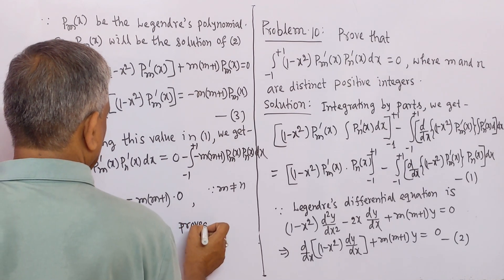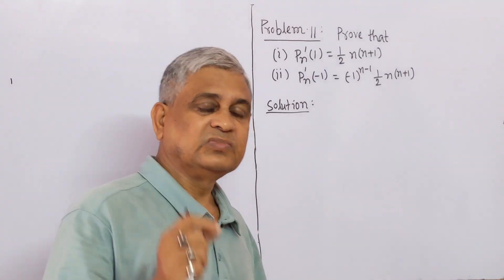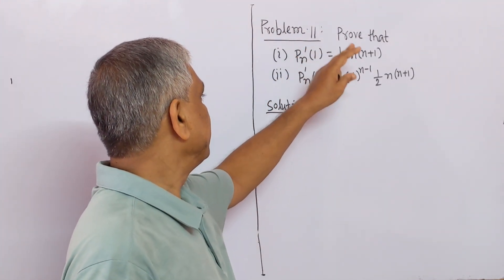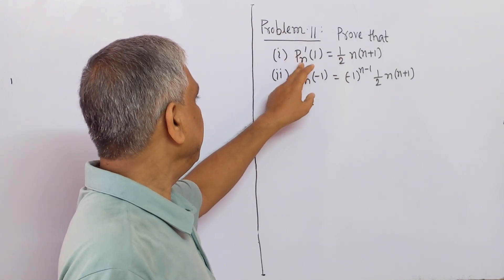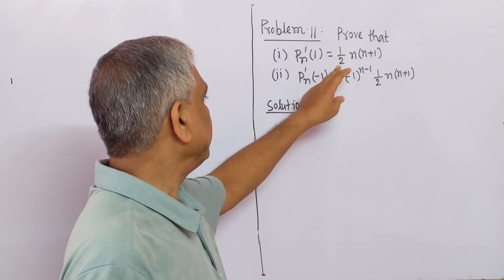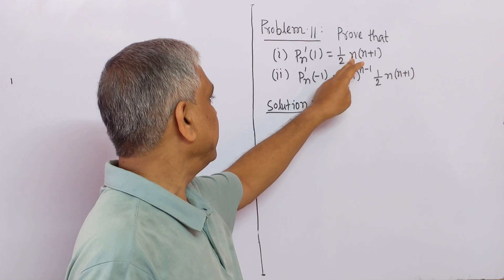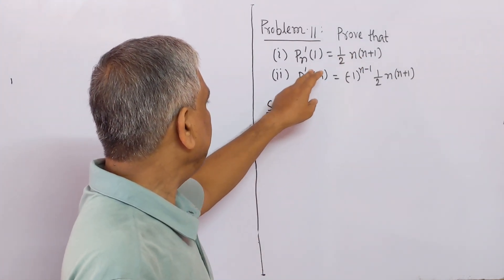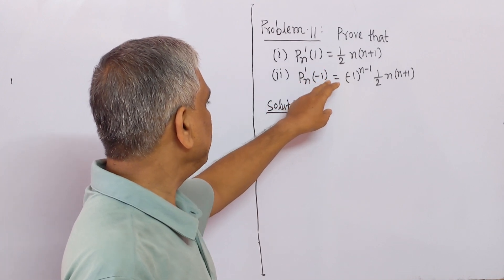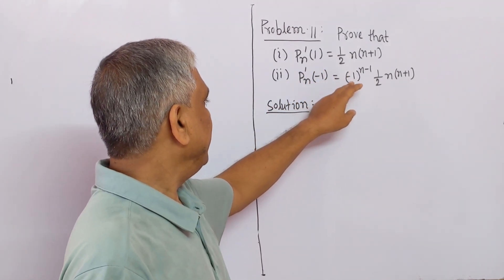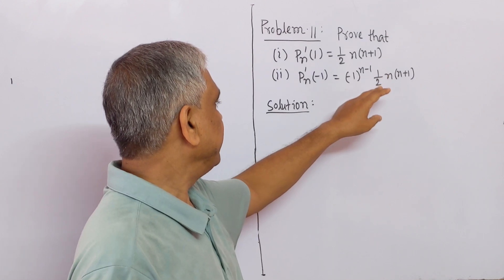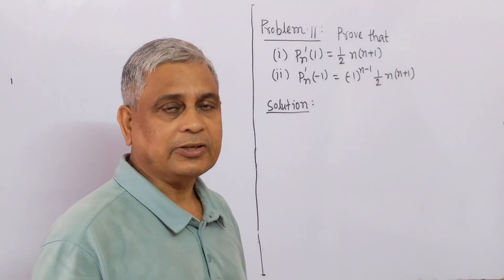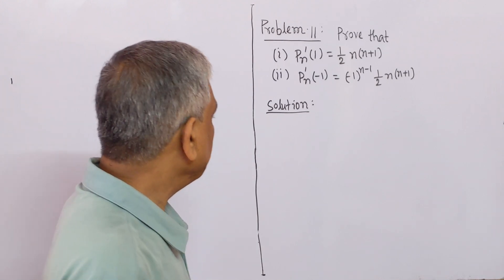Now we solve problem number 11. Prove that: (1) P_n'(1) = (1/2)n(n+1), and (2) P_n'(-1) = (-1)^(n-1) times (1/2)n(n+1).